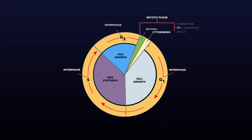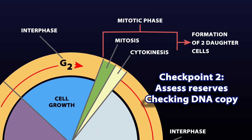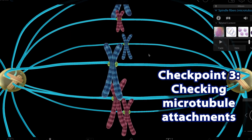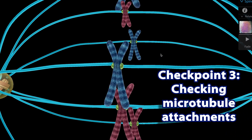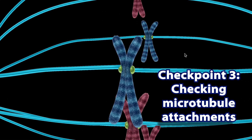The next checkpoint happens at the end of G2. Here, cell size and protein reserves are assessed and the copied DNA is given the once-over to make sure that it copied properly. If there's a problem with the DNA, it gets repaired before we move on. The final checkpoint happens at the end of metaphase. This check makes sure the microtubules are attached properly to each sister chromatid. If they're not, during anaphase, one of the cell copies would end up with too much or too little DNA. Mitosis is halted until this step is completed. Each of these checkpoints is preventing disaster at the next step.